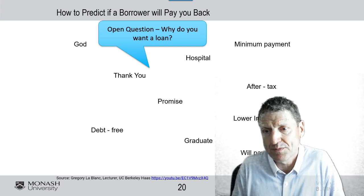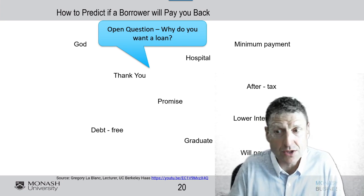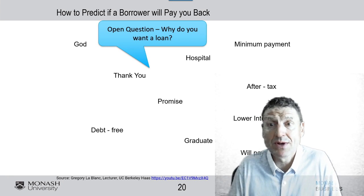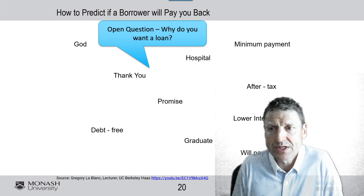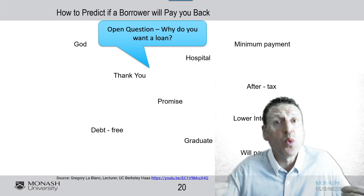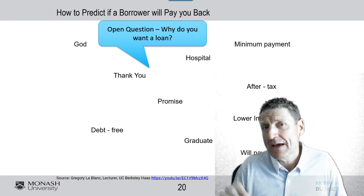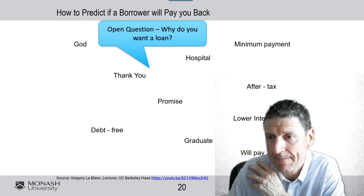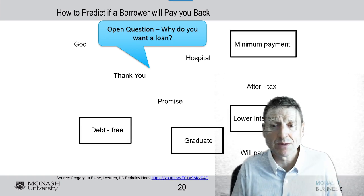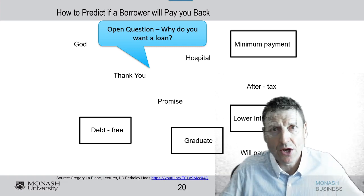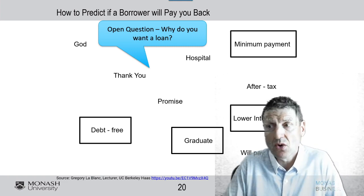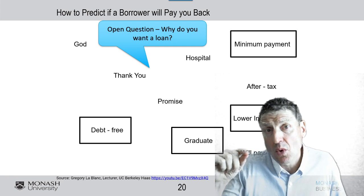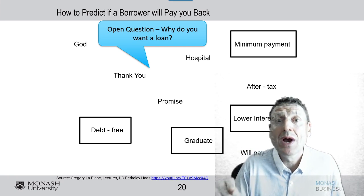Which of these words do you think would be the best predictor? 'God,' 'thank you,' 'promise,' 'debt-free,' 'graduate,' 'lower interest rate,' 'after tax,' 'hospital,' 'minimum payment?' It turns out that if the borrower talks about wanting to be debt-free, wanting to help someone graduate, wanting a lower interest rate, or wanting to use minimum payments — these are all predictors of a higher likelihood that a borrower will repay a loan.